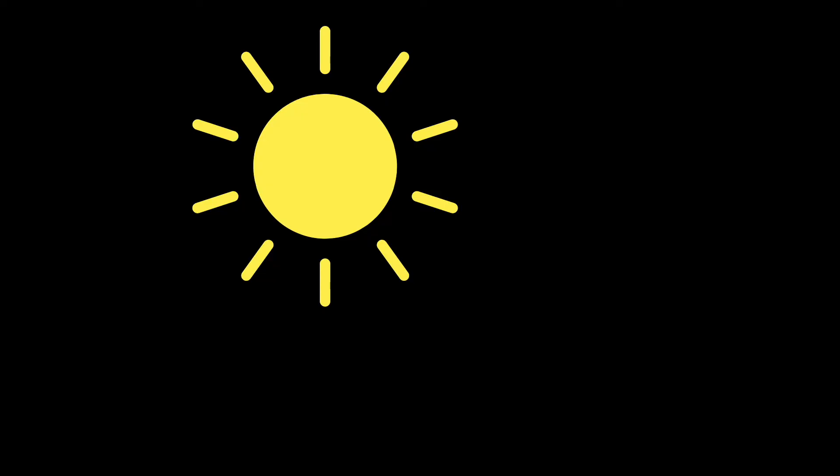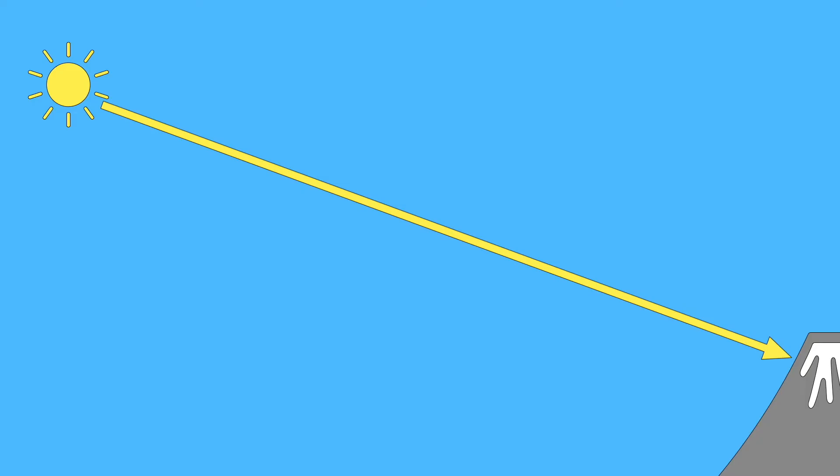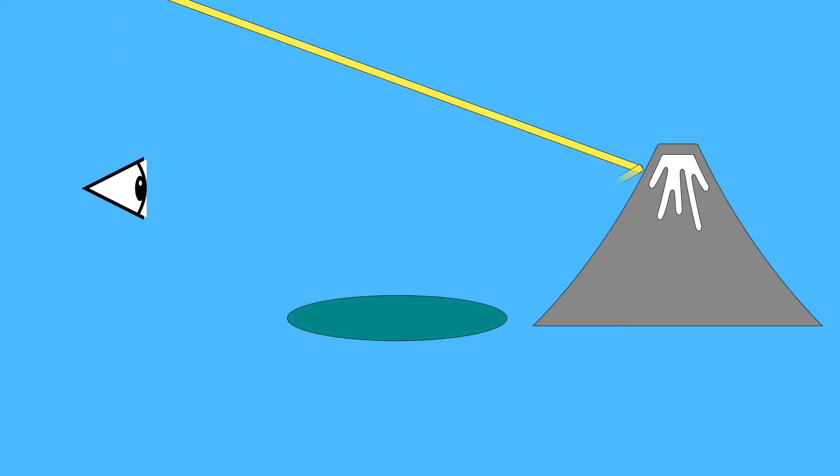For example, this one starts at the Sun. Travels a hundred million miles. Hits the mountain, bounces off, hits the lake, bounces off again, and then enters your eye. And that's just one photon.